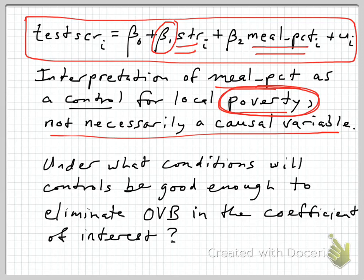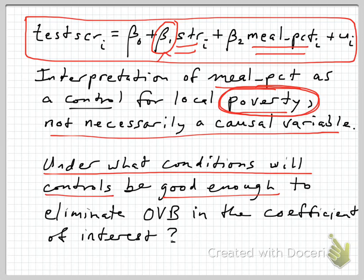That raises the question: under what conditions will these control variables be good enough to eliminate the omitted variable bias in the coefficient of interest, which is beta 1?